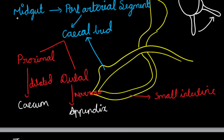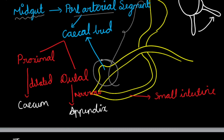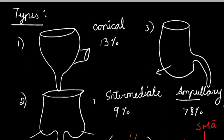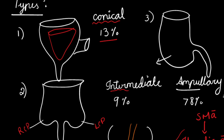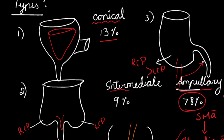Both the cecum and appendix originate from the midgut, from the post-arterial segment forming the cecal bud. The proximal part dilates to form the cecum and the distal part narrows to form the appendix. The three types of cecum result from the movement of the appendix: conical type (13%), intermediate type with right and left cecal pouches and appendix in the depression (9%), and ampullary type — the most common at 78% — where the right cecal pouch is prominent and the appendix moves to the posteromedial aspect.